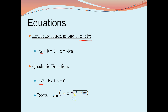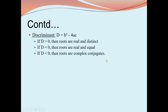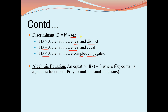The roots are given by x = (-b ± √(b² - 4ac)) / 2a. The expression b² - 4ac has a special name called the discriminant, represented as D. If D > 0, the roots are real and distinct; if D = 0, the roots are real and equal; if D < 0, the roots are complex conjugates.